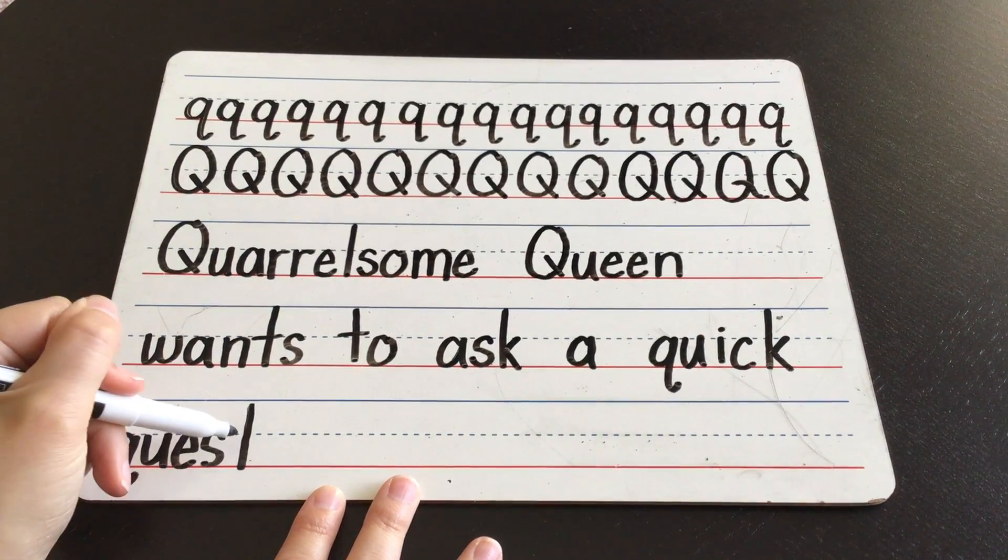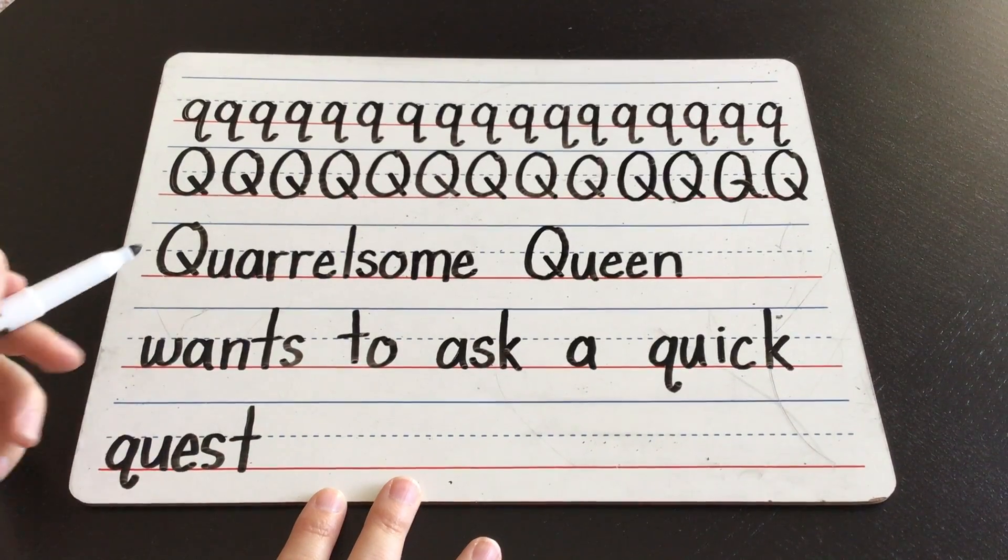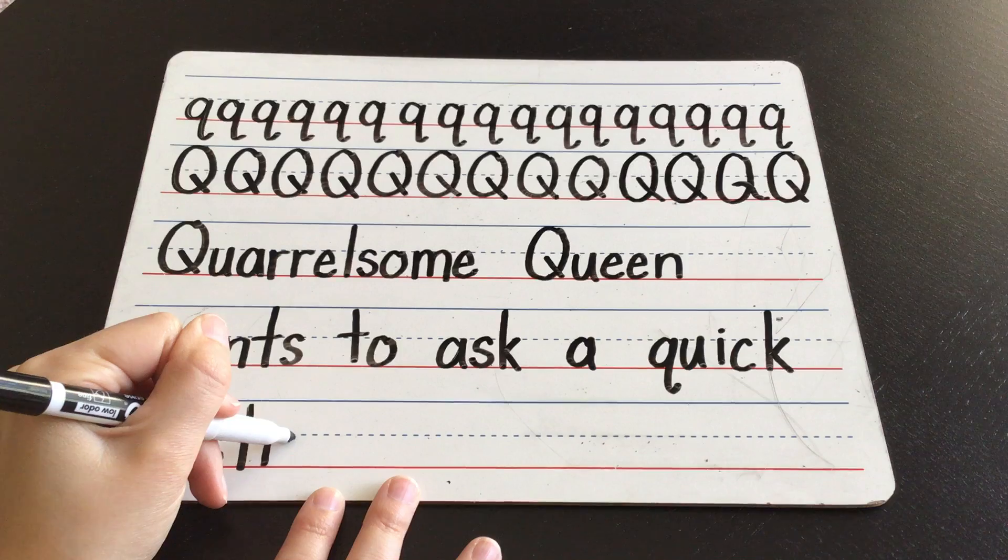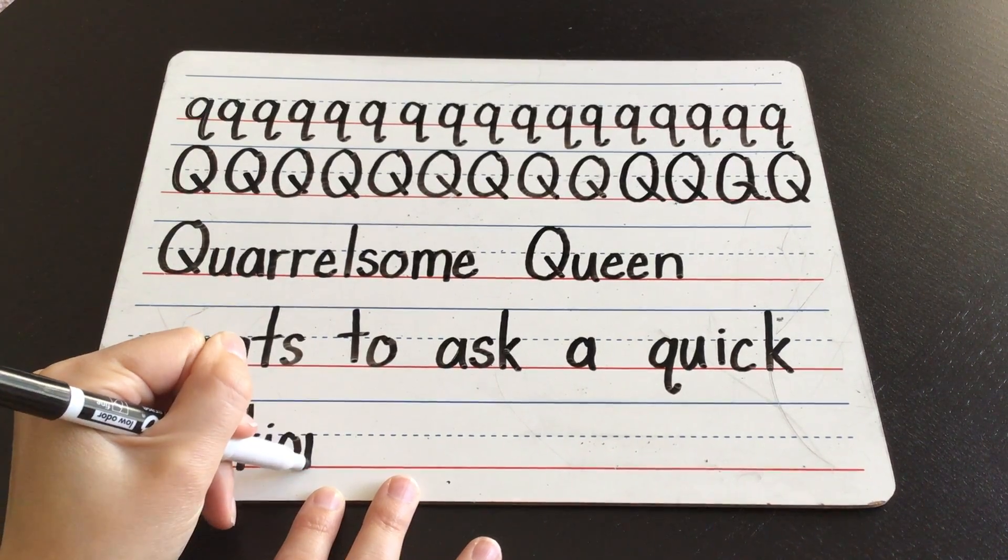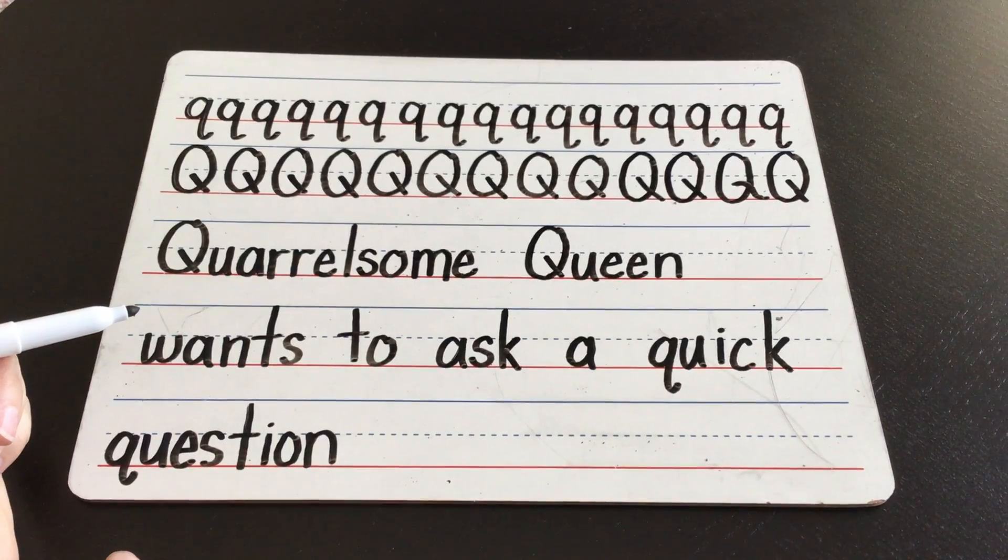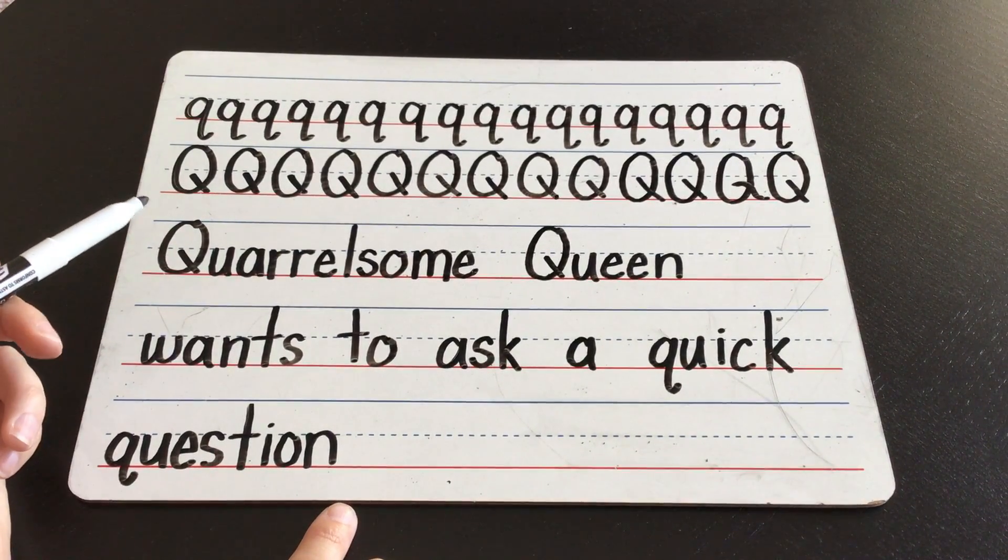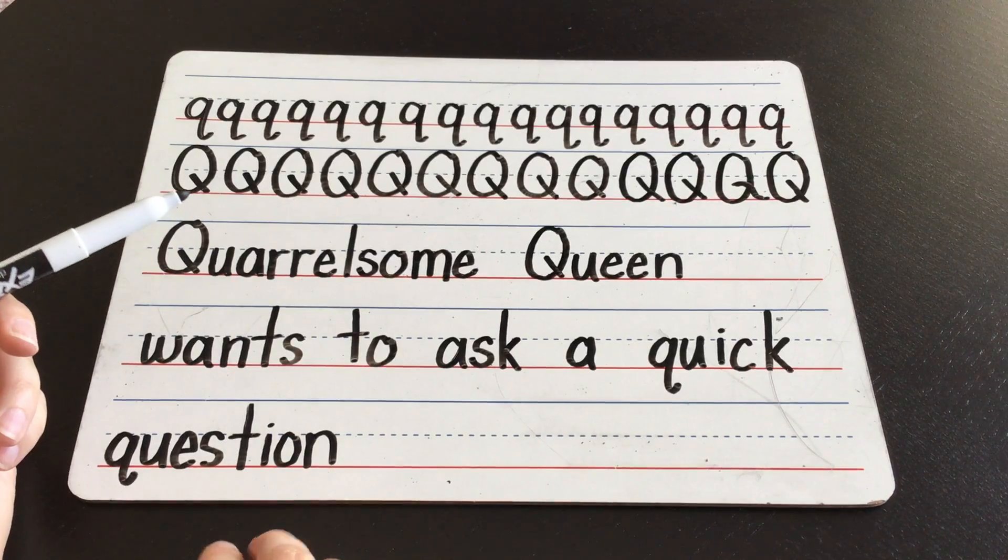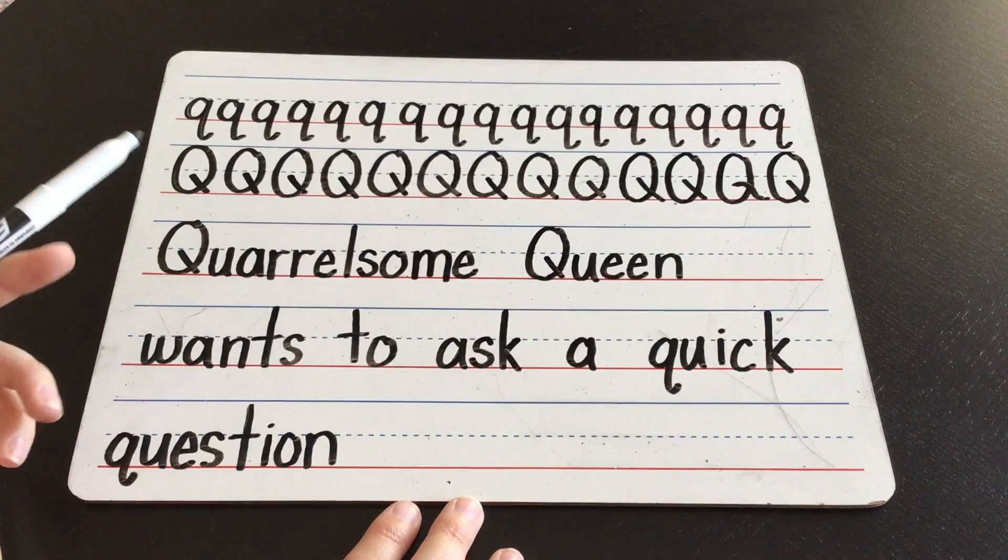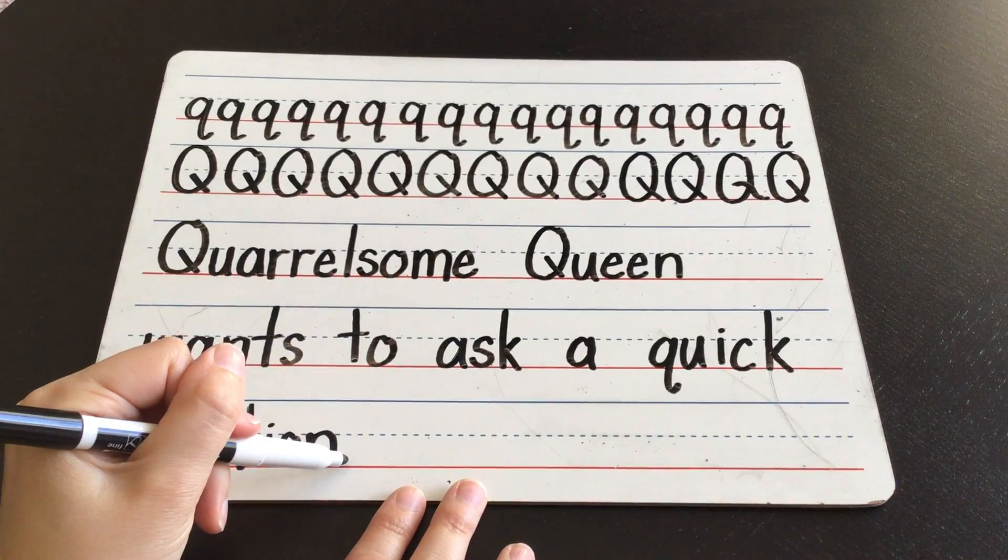It starts with a T. Quest. Question. And then we need I, O, N. Make that question sound. Question. T-I-O-N. We say that in a lot of words and it makes that chun sound. Quarrelsome queen wants to ask a quick question. Period.